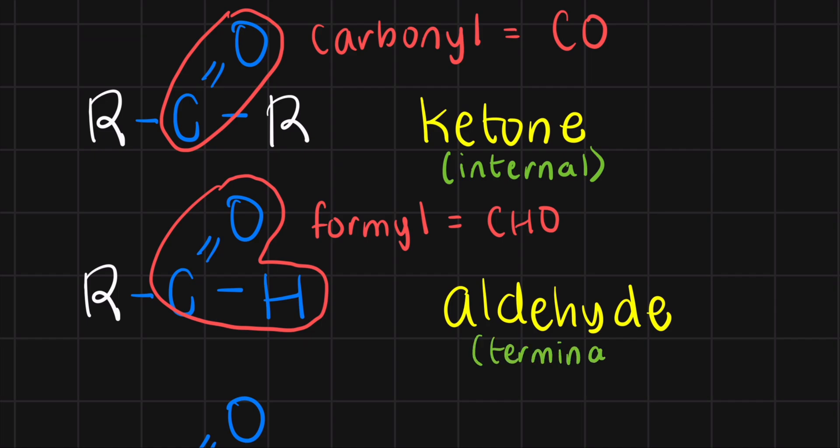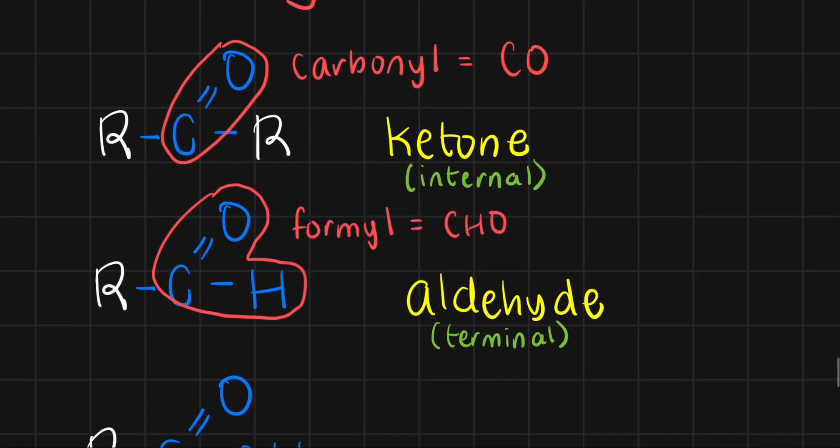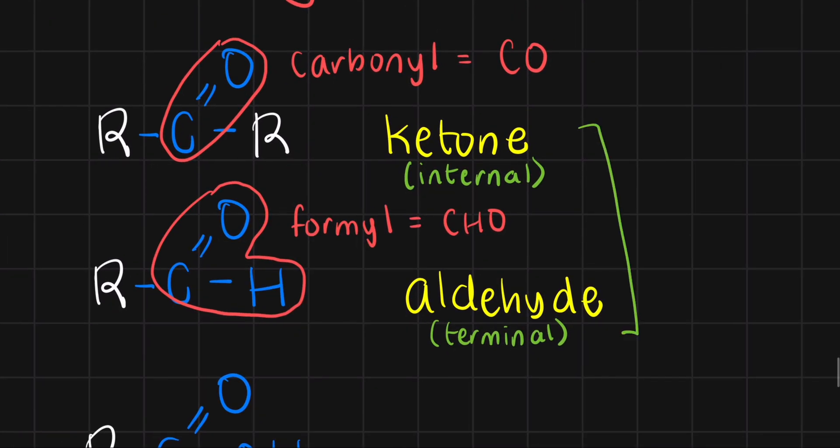And in fact, they're just pretty much the same thing. It's just the location which is different. I said that ketones must always be internal because guess what happens if you put it at the end? It becomes an aldehyde. Conversely, guess what happens if you place the carbonyl of an aldehyde internally? It now becomes a ketone. And since they're basically the same thing, it's just the positioning which is different, I can call these two guys as carbonyl compounds because it's just a matter of playing around with the location or the position of their carbonyl group.